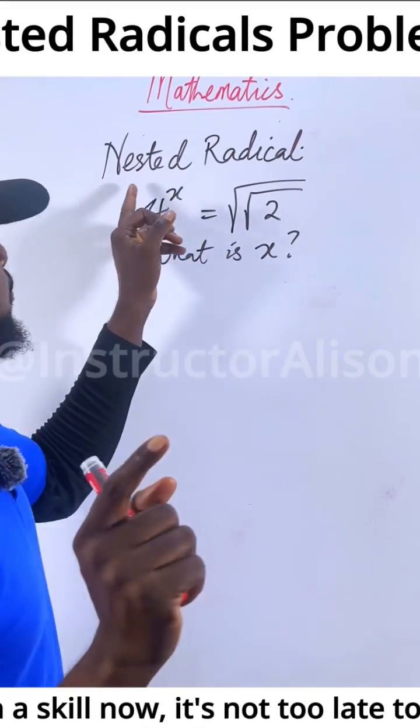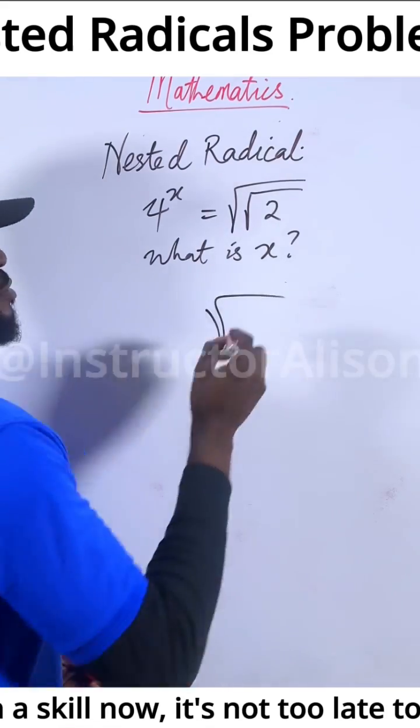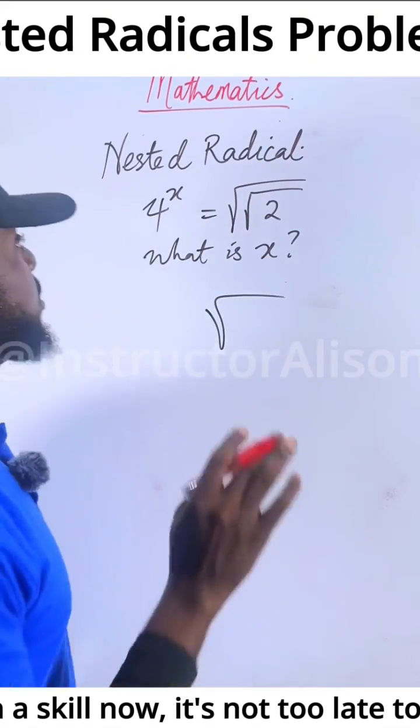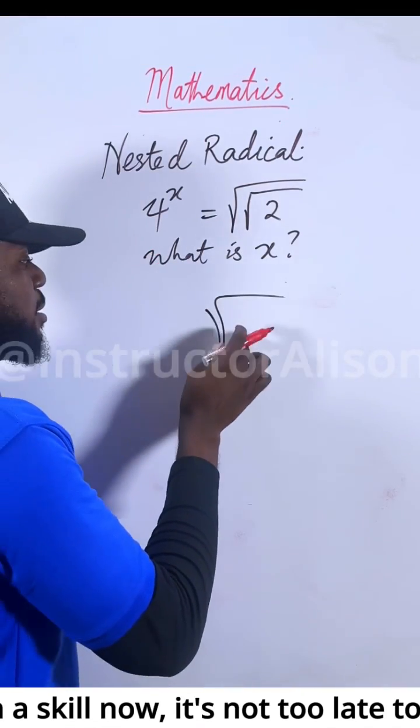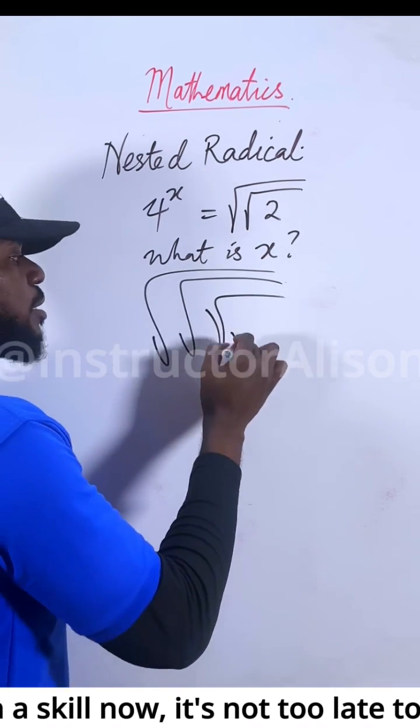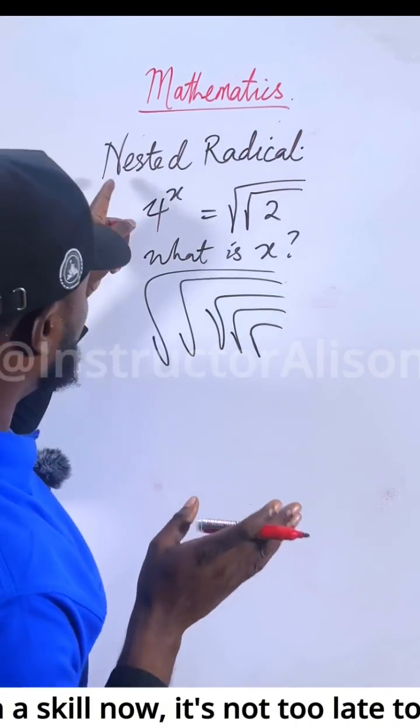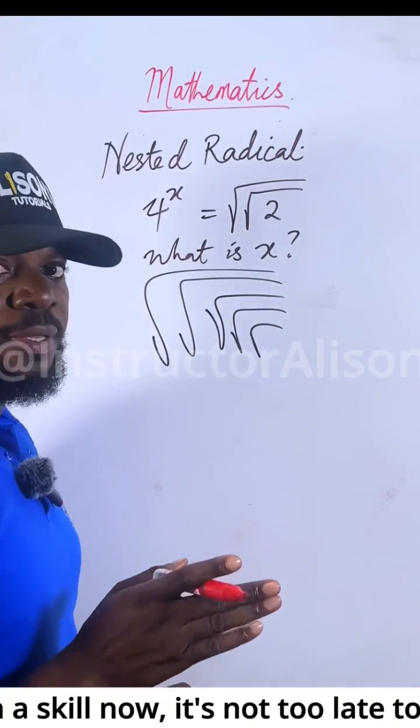Before we solve this problem, we need to understand what nested radical is all about. Radical is square root. To keep it simple, when we say it is nested, it means there is a smaller square root having another square root, having another square root, having another one, just like that. That's what we call nested. It's also a word we use in programming.